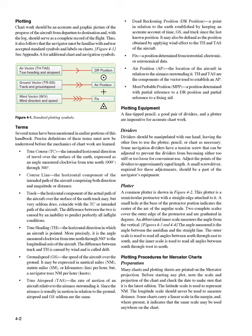Course line: the horizontal component of the intended path of the aircraft, comprising both direction and magnitude or distance. Track: the horizontal component of the actual path of the aircraft over the surface of the Earth. Track may, but very seldom does, coincide with the TC or intended path of the aircraft. The difference between the two is caused by an inability to predict perfectly all in-flight conditions.